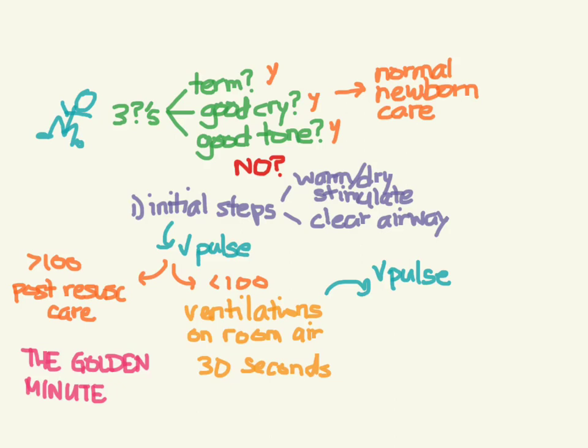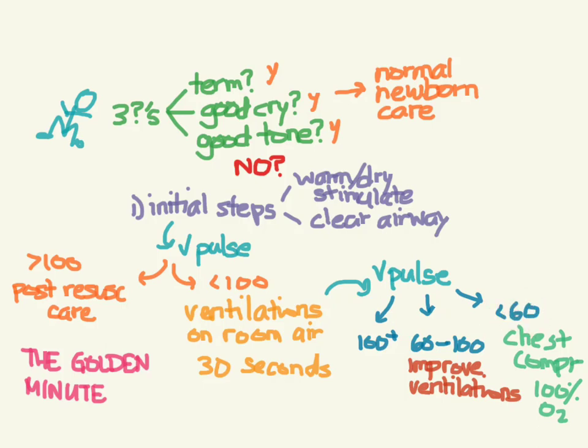The best places to check for a pulse are on the precordium or at the umbilical stump. You're not going to feel little tiny carotids or femoral pulses. If the pulse is greater than 100, good job, move on to post-resuscitative care. If the pulse is between 60 and 100, we've got to improve your ventilation. If the pulse is less than 60, now it's time to get serious. We're going to start chest compressions and crank that oxygen up to 100%. Then check a pulse again, and if we're still less than 60, it's time for epinephrine.